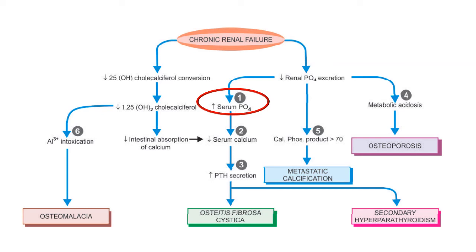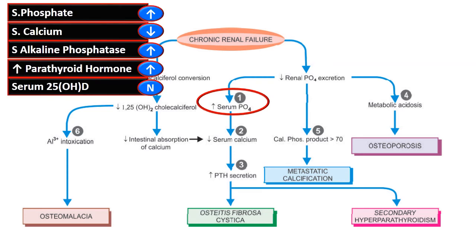There is also accumulation of beta-2 microglobulin amyloid, leading to amyloidosis. The biochemical picture of renal osteodystrophy includes increased phosphate, decreased calcium, increased serum alkaline phosphatase, increased parathyroid hormone, and serum 25-hydroxyvitamin D within normal limits.